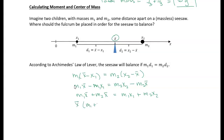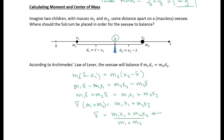Factoring out X-bar: X-bar times (m1 plus m2) equals m1·X1 plus m2·X2. Therefore, X-bar — the center of mass — equals m1·X1 plus m2·X2 over the total mass (m1 plus m2). The numerator here is called the moment of mass.